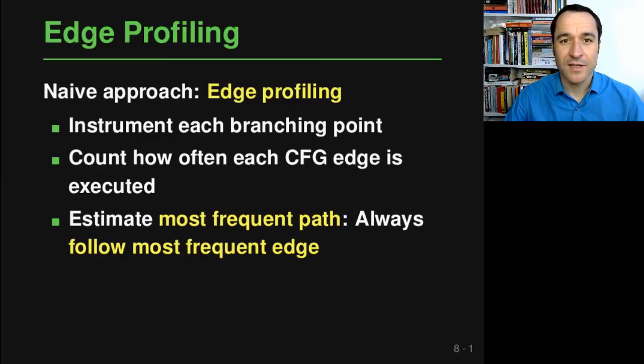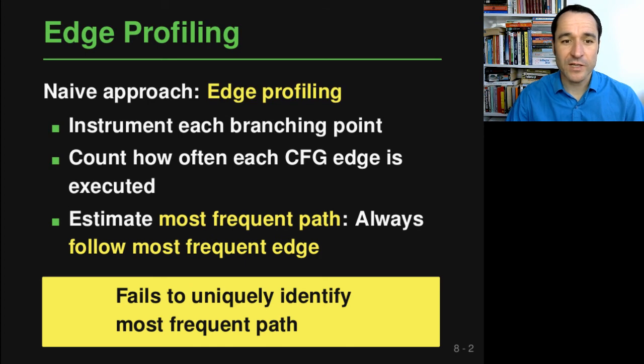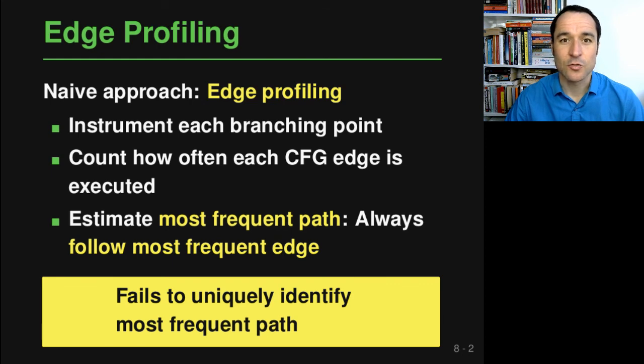Getting back to edge profiling: what we've basically seen is that this idea fails to uniquely identify the most frequent path and may actually give us a wrong answer. So this is not the solution we are looking for. This is the end of the first video. You now know what path profiling is and how not to solve it. I hope you're interested in the second video, where we will look at the Ball-Larus algorithm that will actually solve this problem. Thank you for listening and see you next time.